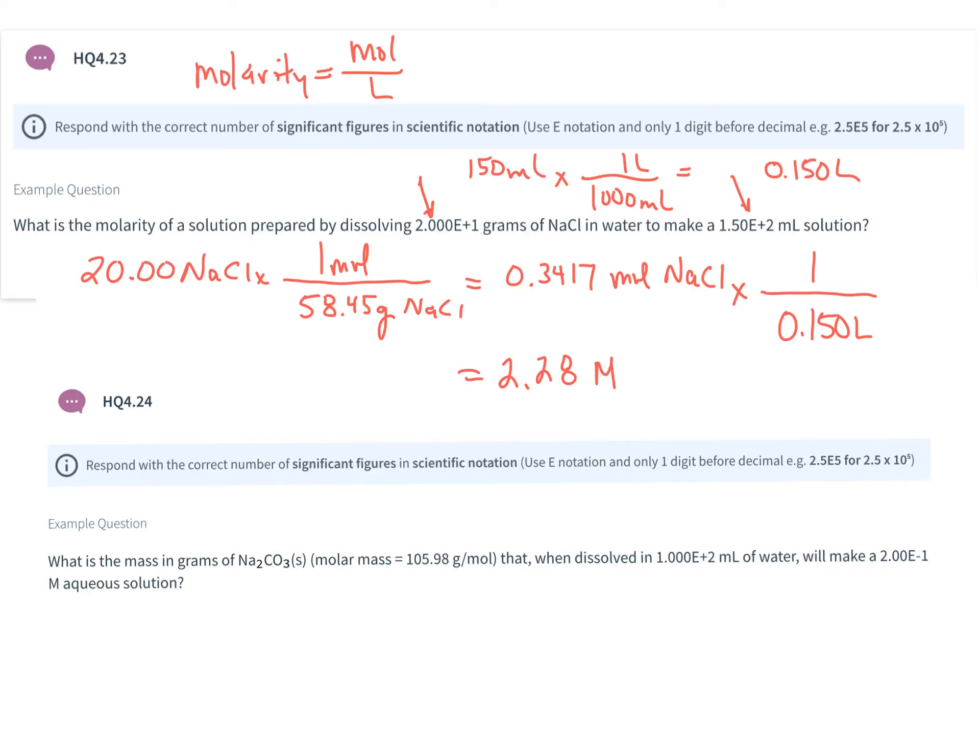For significant figures, I've got four significant figures here in my mass. However, I have three significant figures here in my volume. I should report the answer to three significant figures because of that. So 2.28 molar. And be careful with this question because your mass of sodium chloride might be different than mine. The steps would be the same even if that amount of sodium chloride is different.